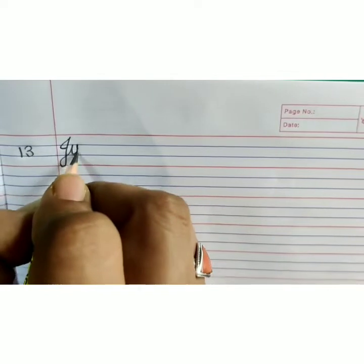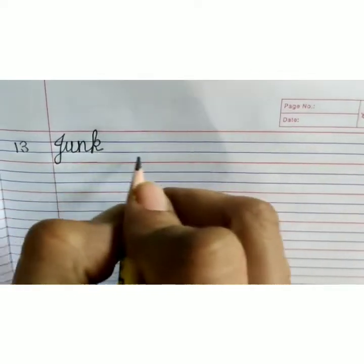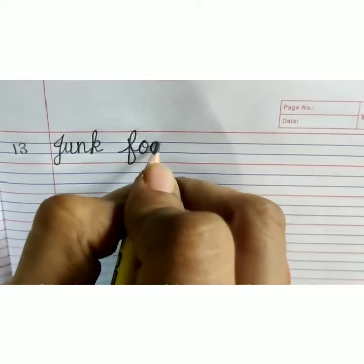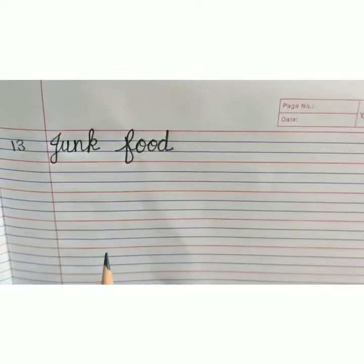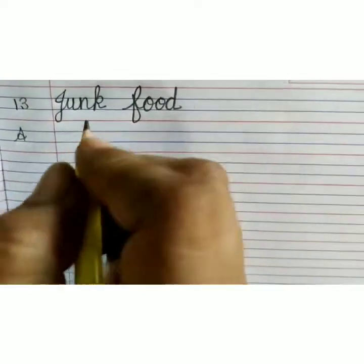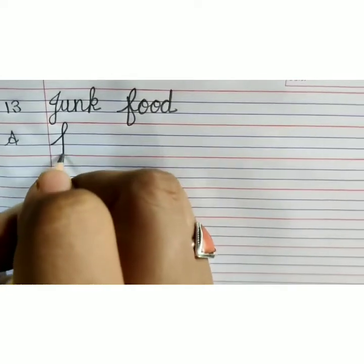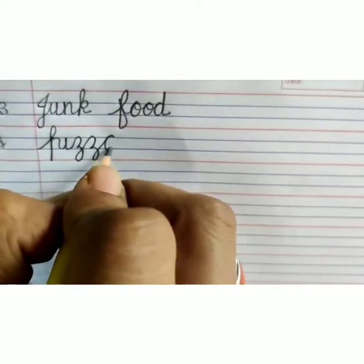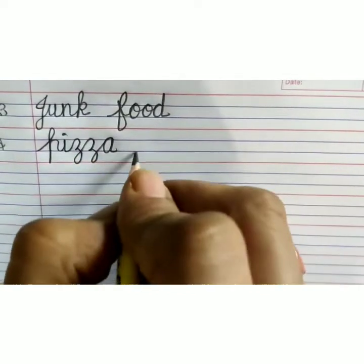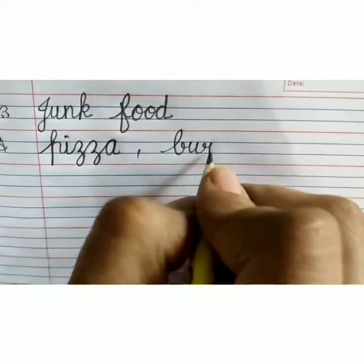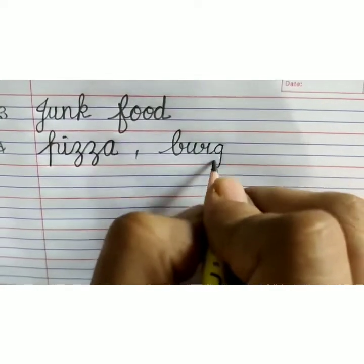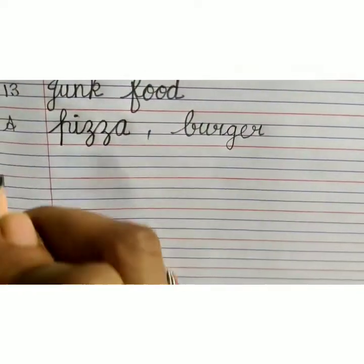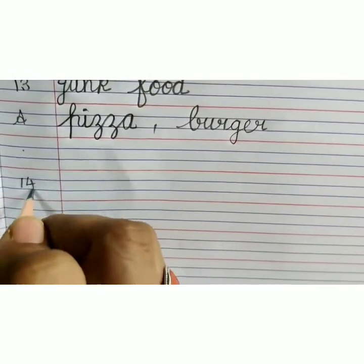Capital J-U-N-K, junk, F-O-O-D, food, junk food. Answer: P-I-Z-Z-A, pizza, comma, B-U-R-G-E-R, burger. Leave one line, write number 14.